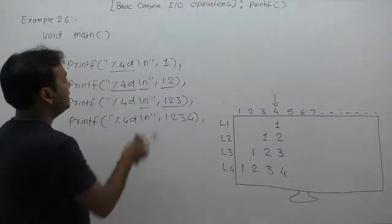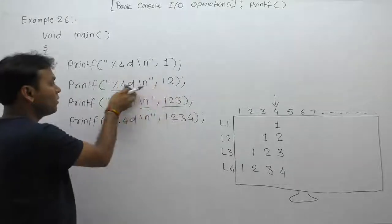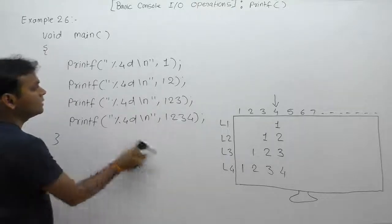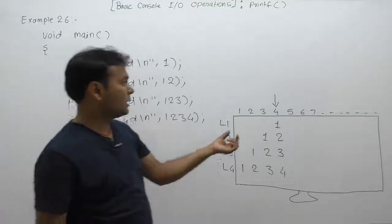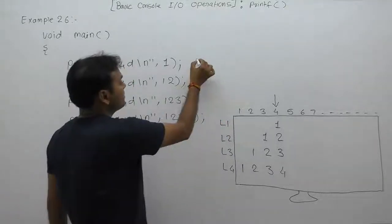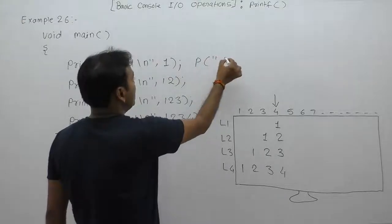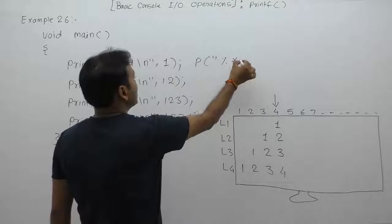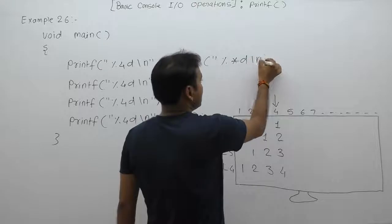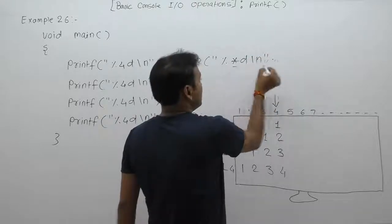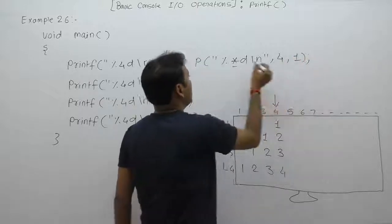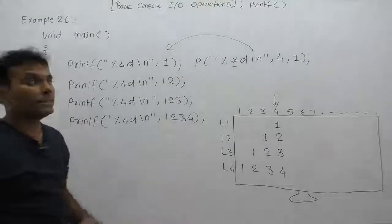We can simplify this because in all cases the width is always fixed. So we can supply the width value using a star: use `printf("%*d\n", 4, number)`. In place of the star, we supply 4, then the actual number value. This format is equivalent to the previous printf functions.